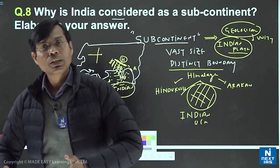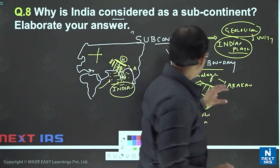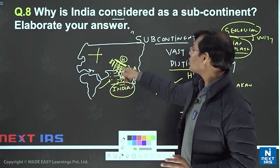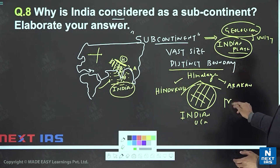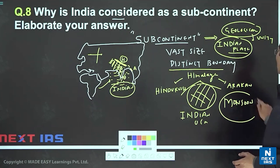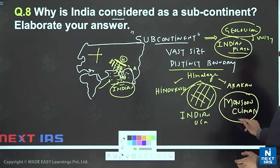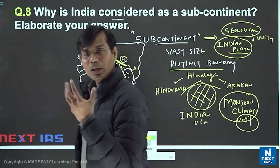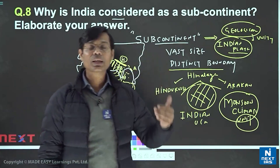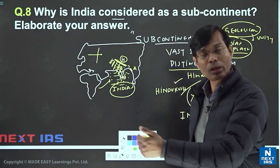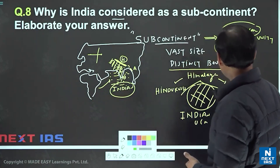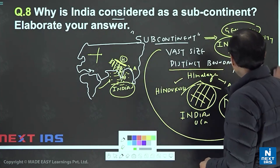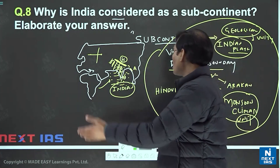Once geography and geology unite a region, climate also unifies it. After the Indian plate collided with Eurasia and formed the Himalayas, the monsoon climate emerged. This entire region falls under monsoon climate unity — heavy rainfall in June, July, August, and September. There is a true reversal of winds: in one season the southwest monsoon, and in October–November the northeast monsoon. This monsoon climate unity further defines the subcontinent.